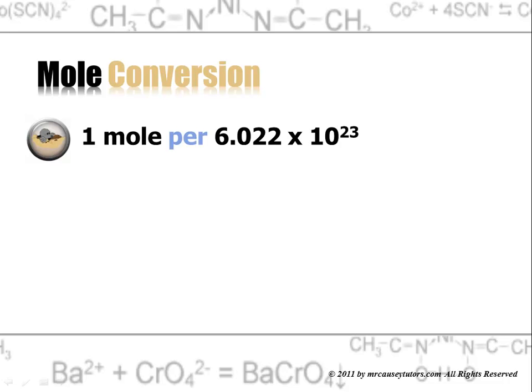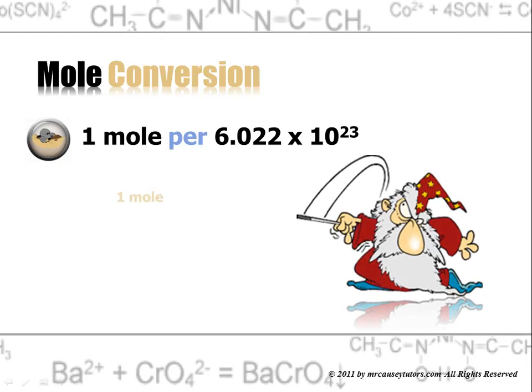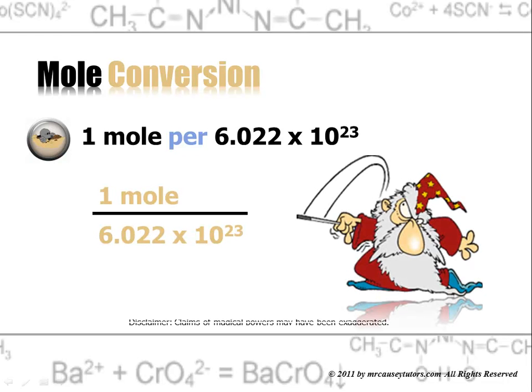Let's look at some mole conversions. One mole per 6.022 times 10 to the 23. Now think about that. It's kind of like a little magic. One mole is 6.022 times 10 to the 23. And it kind of gives us a magical way of changing moles into particles and particles into moles.